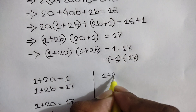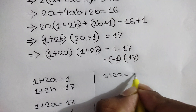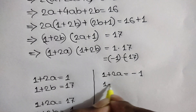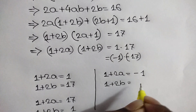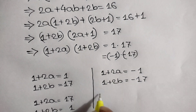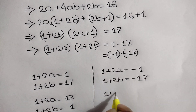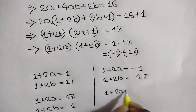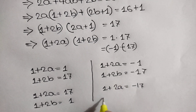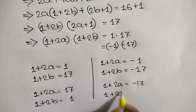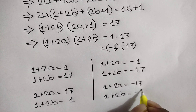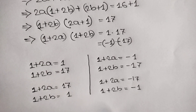For the second case: 1 plus 2a equals negative 1 and 1 plus 2b equals negative 17, or 1 plus 2a equals negative 17 and 1 plus 2b equals negative 1.